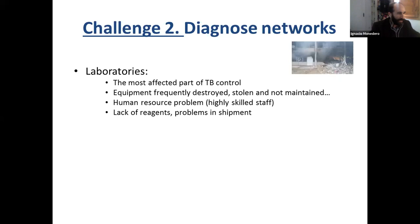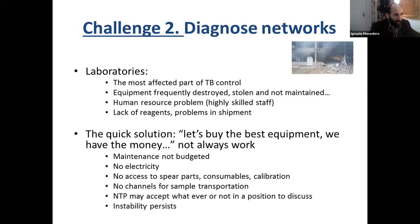A key problem is human resources and capacities, but also lack of reagents and problems with shipments. We need things that are standalone. Some quick so-called solutions — if we see implementation in some of these countries, the approach is: we have money, let's buy the best equipment. But if we don't plan for maintenance, it becomes a problem. Sometimes we cannot use the best technology; electricity remains a problem, there is no access to spare parts or calibration consumables, and transportation of samples is a challenge.